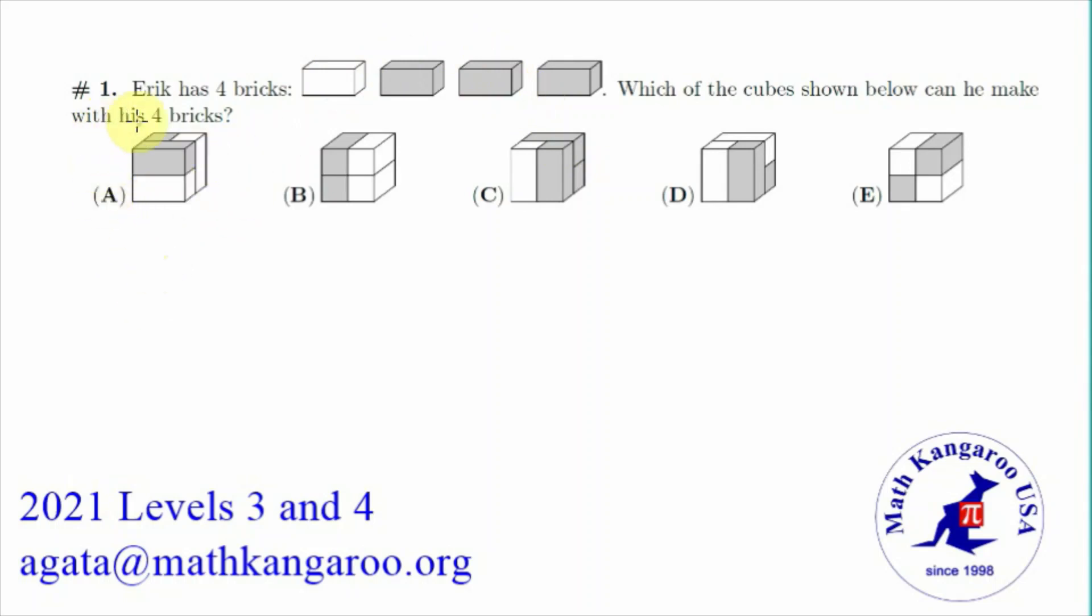A has 2 grey ones and 2 white ones. So we are going to label that as 2W for white and 2G for grey.